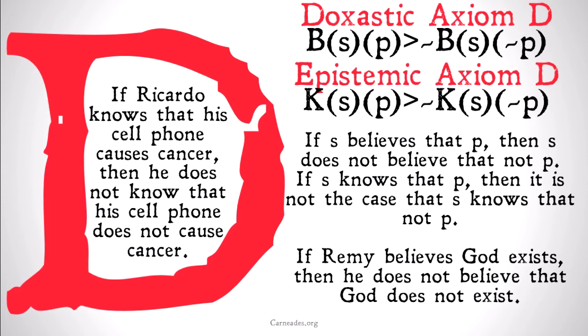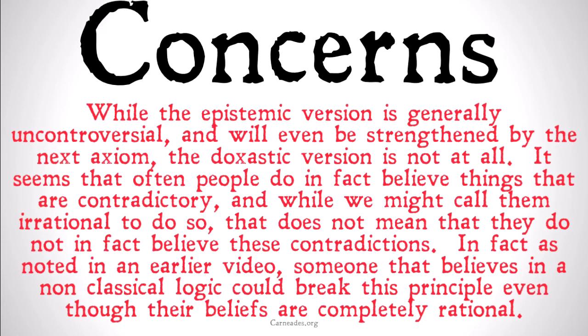Basically, this is a claim that you don't have contradictory beliefs — you can't both believe one thing and its contradiction. The epistemic version of this is generally going to be uncontroversial, because to violate it would violate the law of non-contradiction, since knowledge implies truth, as we'll see in the next axiom T. The doxastic version is not uncontroversial at all. It seems that often people do in fact believe things that are contradictory, and while we might call them irrational to do so, it doesn't mean that they don't in fact hold those contradictory beliefs.